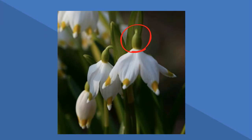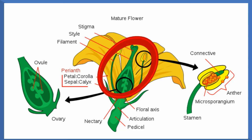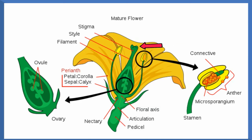The female portion of the flower is called a pistil and it has four major parts. The stigma is the top or head of the pistil and it receives the pollen. The style is the stalk of the pistil, and when pollen reaches the stigma it will begin to grow a tube down the style in order to reach the ovary.